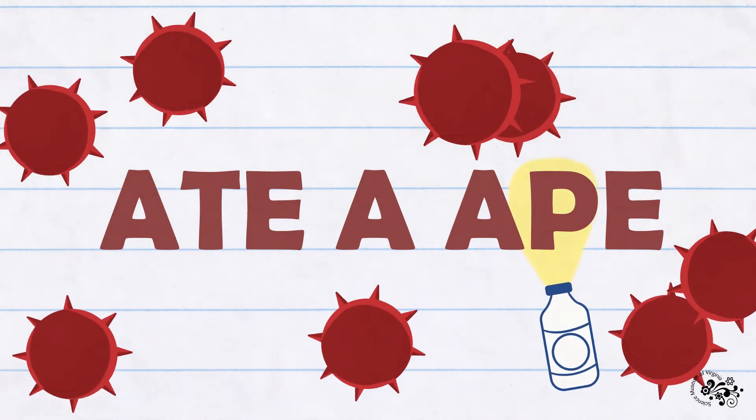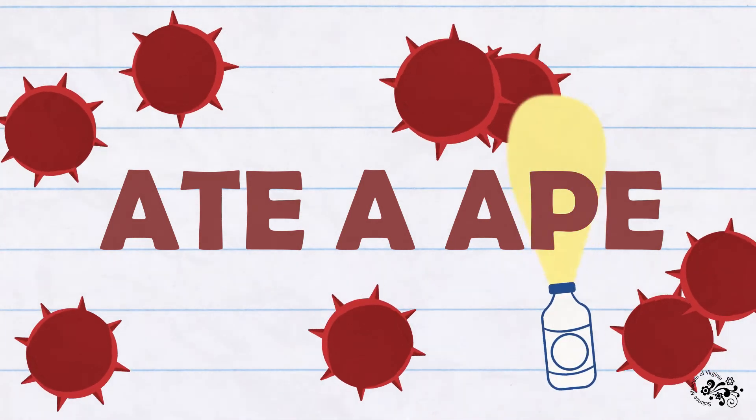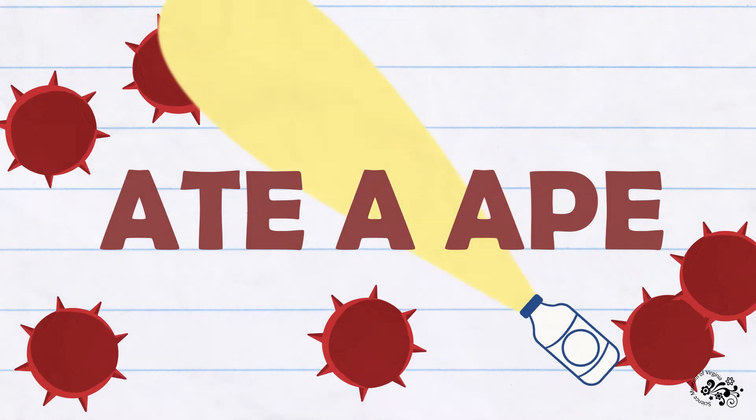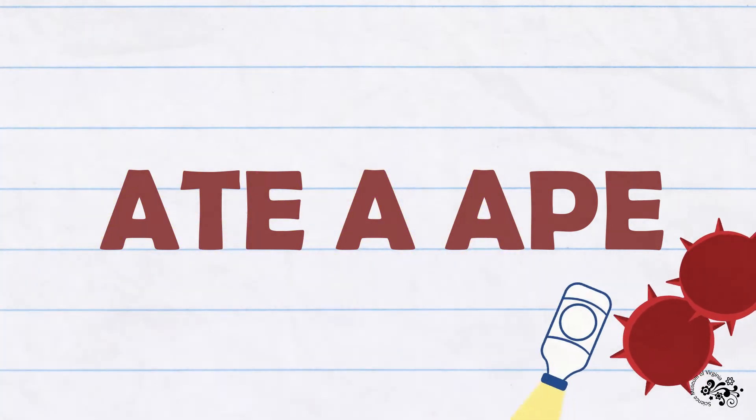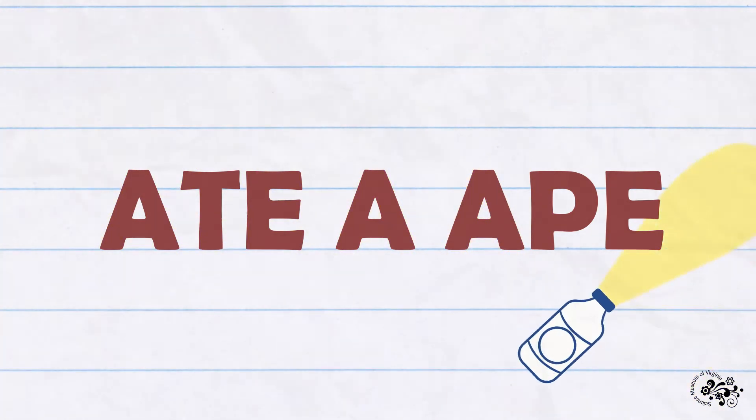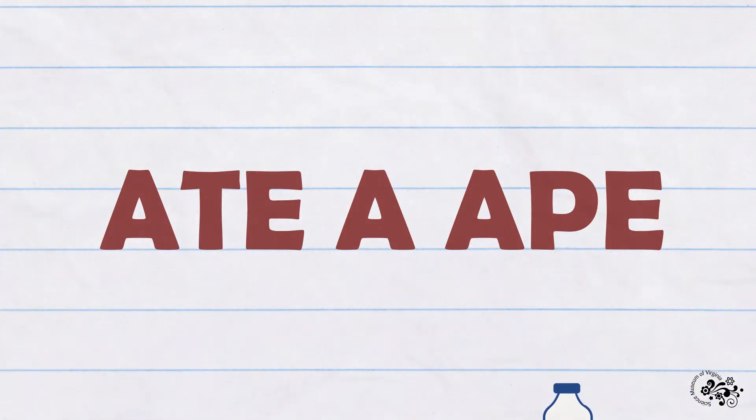This is where booster vaccines come in. Their job is to look for the P in the third word, because as immune memory fades with time, it may increasingly fail to find the hidden P.